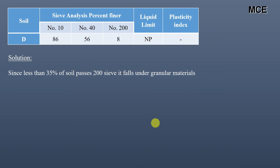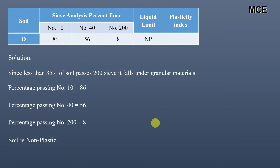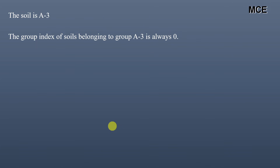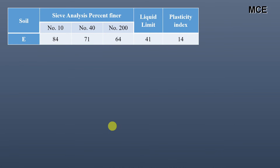For soil D, only 8% of the soil sample passes sieve number 200, so it again falls under granular materials. The percentage passing sieve number 10 is 86, sieve number 40 is 56, and sieve number 200 is 8. This soil is non-plastic. Using the AASHTO table, the soil falls in group A-3, for which the percentage passing sieve number 40 is 51 minimum — our soil has 56 — and sieve number 200 is 10 maximum — our soil has 8. The group index for A-3 is always 0, so the classification is A-3(0).